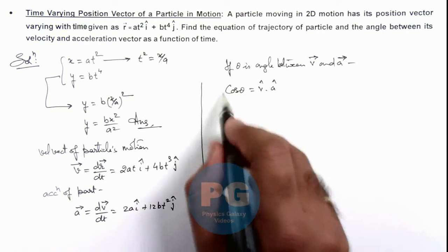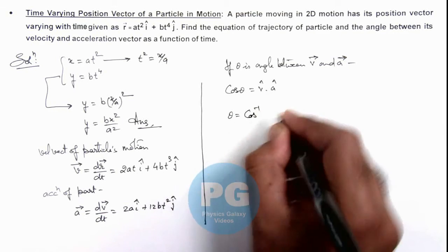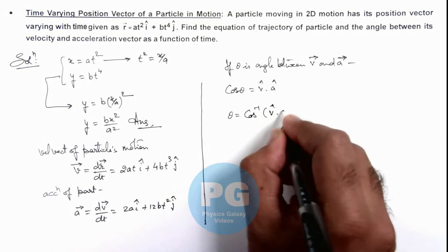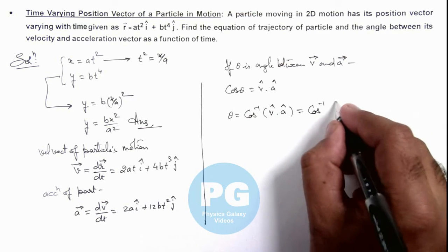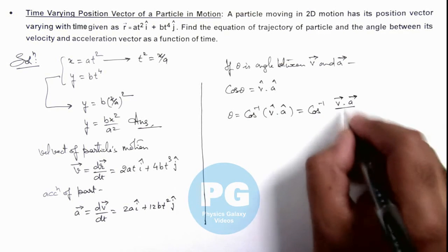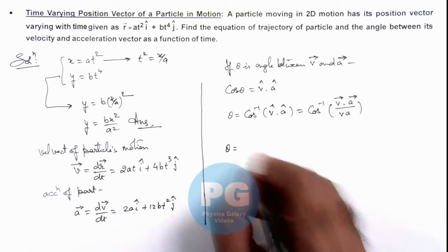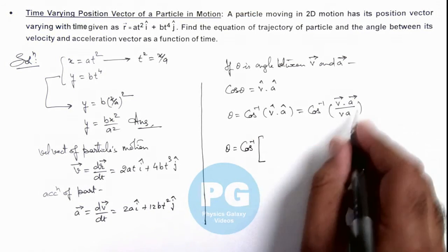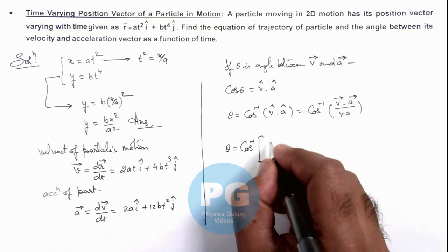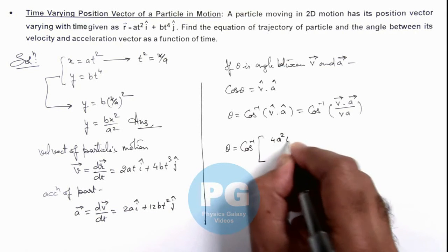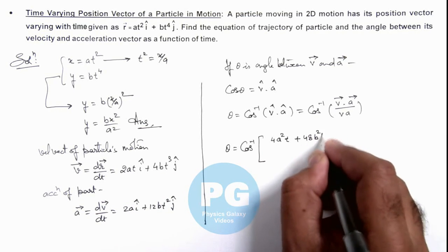So here, the value of θ is cos⁻¹(v̂·â), which can be written as cos⁻¹(v⃗·a⃗/(|v⃗||a⃗|)). If we substitute the values, we'll get the value of θ, which is cos inverse of the whole term. Here we can write, if we take the dot product of these two, this will give us 4a²t plus 48b²t⁵.